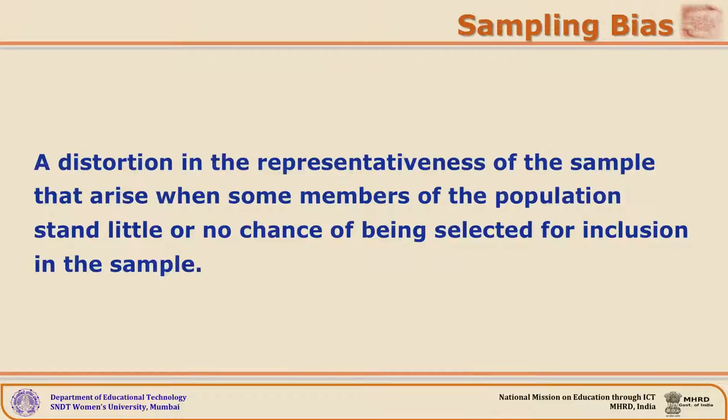As we have said, in sampling the human being is the weakest instrument for selecting a sample. One has one's own likings, prejudices, and biases towards the people and institutions around, and thus the selection goes wrong. This kind of sampling bias occurs whenever the researcher's own intervention comes into picture, or the sampling is made on the basis of the researcher's own selection. Sampling bias is a distortion in the representativeness of the sample that arises when some members of the population stand little or no chance of being selected for inclusion in the sample.